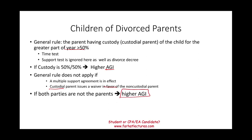You should go to Farhat Lectures and look at multiple choice questions and true-false questions to help you understand these concepts. Qualifying child will appear again and again when we talk about credits. Know the difference between qualifying child and qualifying relative — it's definitely a testable, easy topic on the CPA exam, the enrolled agent exam, and for accounting students taking a tax course. Good luck, study hard, and stay safe.